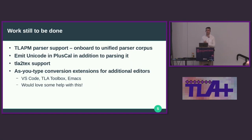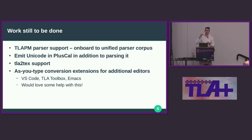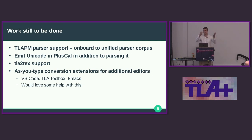Work still to be done: the TLA+ proof system parser uses its own parser and does not yet support Unicode. As part of this work I made a gigantic unified parser corpus of input TLA+ snippets and expected parse tree formats, so now SANY and the TreeSitter grammar both share the same test suite — I think that's really cool, and I want to onboard the TLAPS parser to that too. I would like the PlusCal translator to emit Unicode in addition to parsing it. Right now it'll parse your Unicode input and just emit ASCII like normal. TLA2TeX — I know academics use this in their papers, so it would be nice to support that. And as-you-type conversion extensions for additional editors like VS Code, Toolbox, and Emacs.